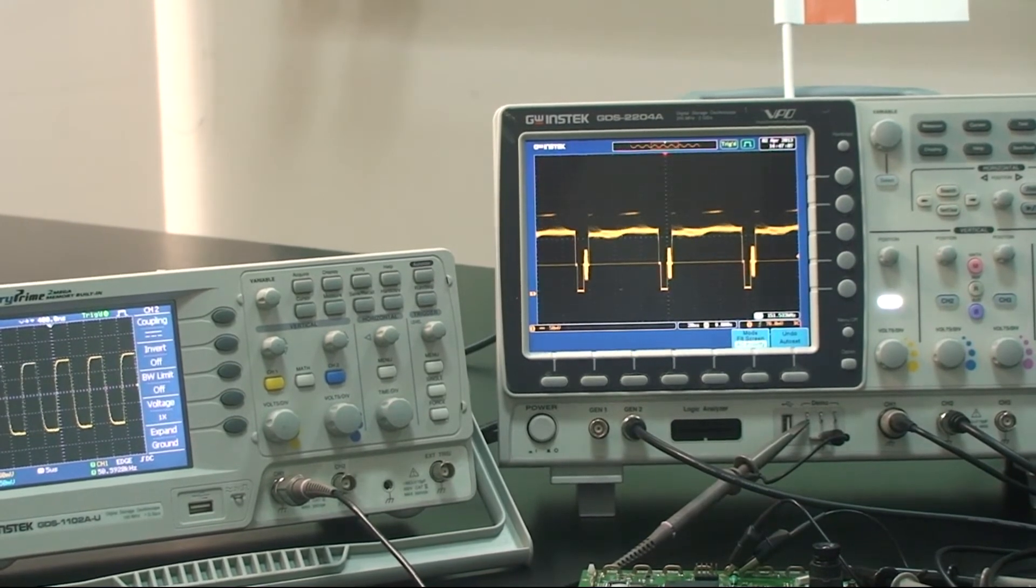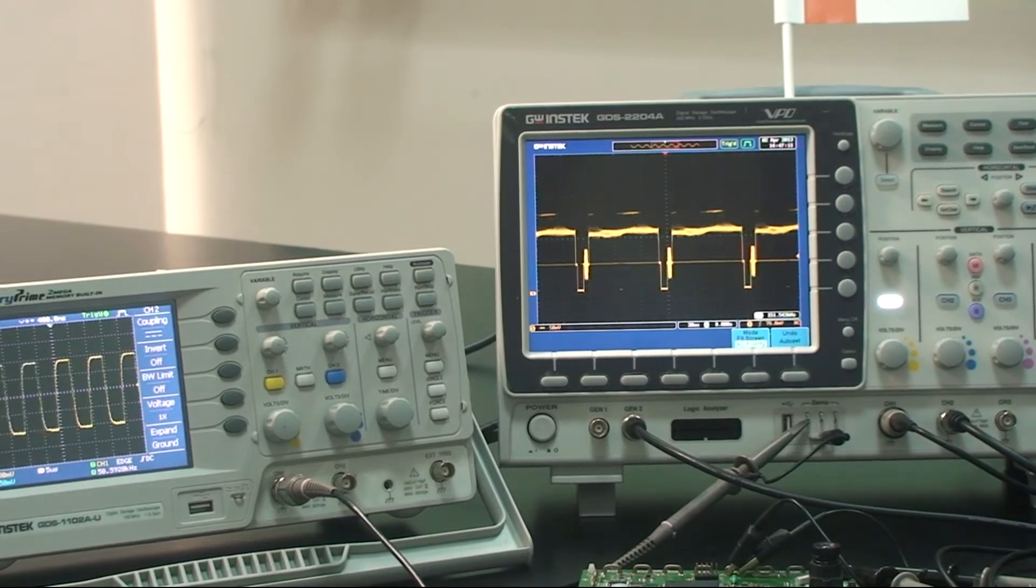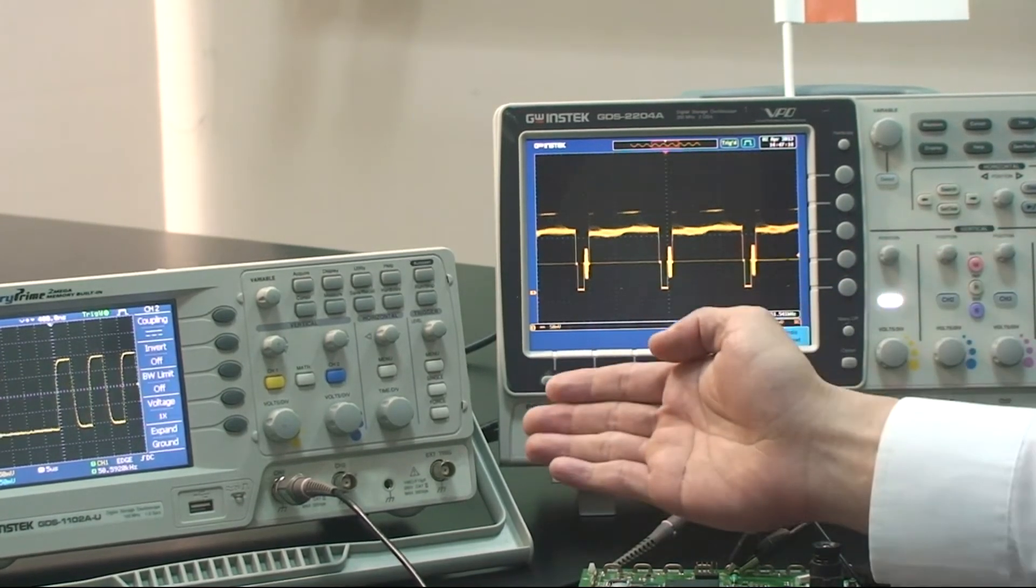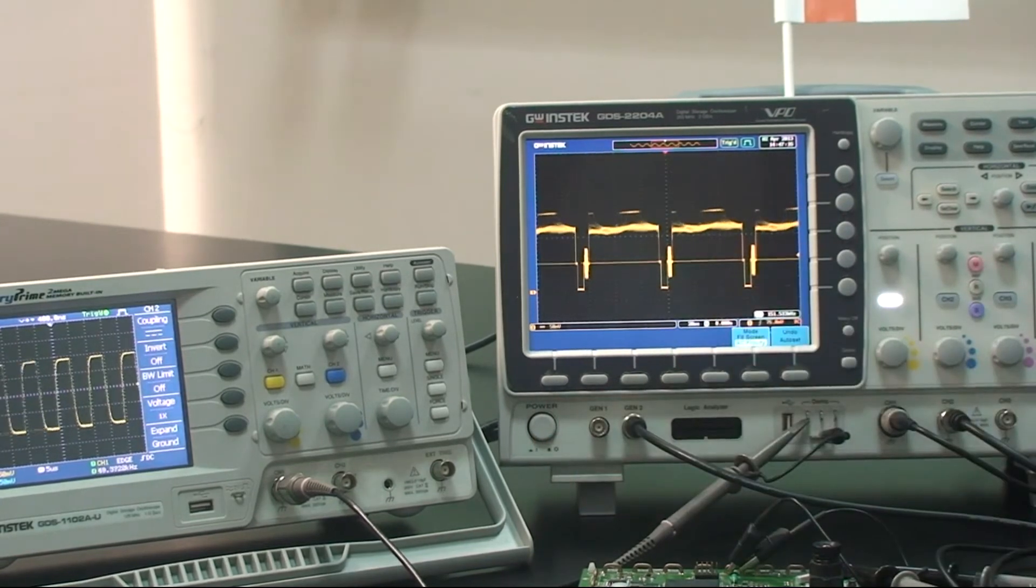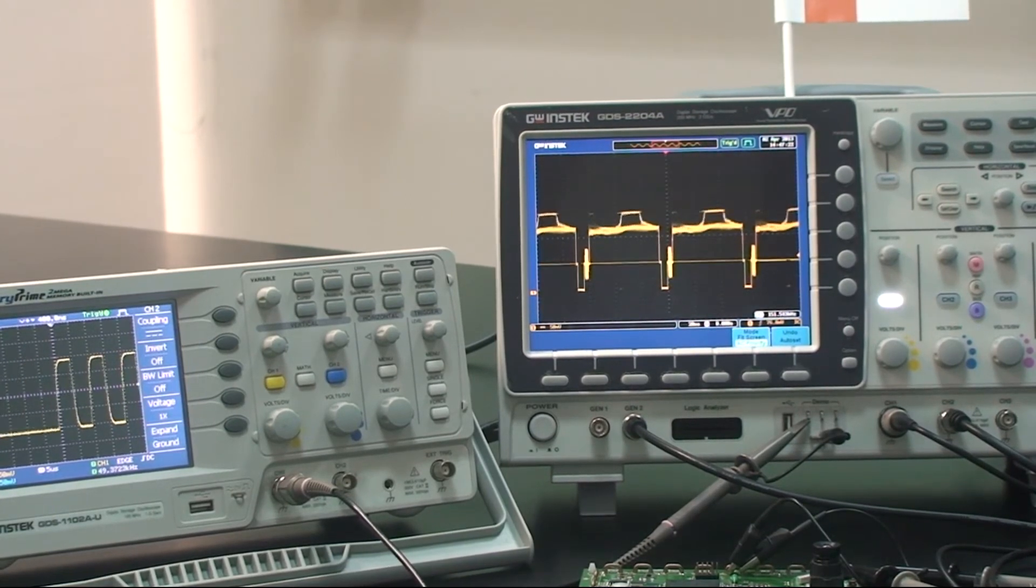The frequency counter function of GDS-1008U of GWINSTEK will also be used for this test to measure trigger output frequency from trigger circuit. By doing so, the waveform update rate can be measured.